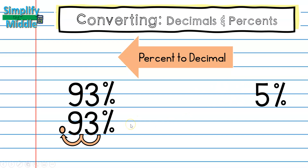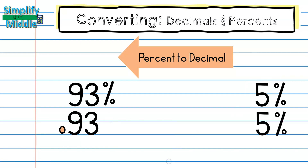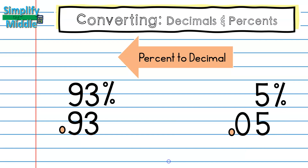Did you get that one right? If you did, let's try 5%. On this one, I had to add in a zero for my place value. So 5 hundredths is the same as 5%, and 93 hundredths is the same thing as 93%. We could imagine this grid has 93 of those boxes shaded, and this grid only has 5 of those boxes shaded — not even a full column.